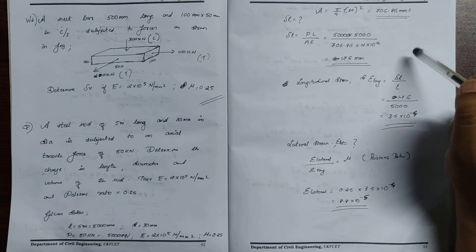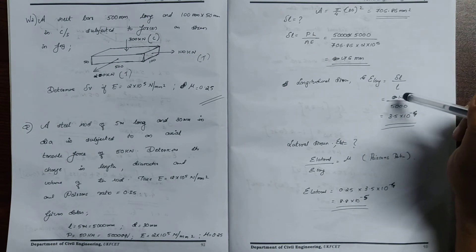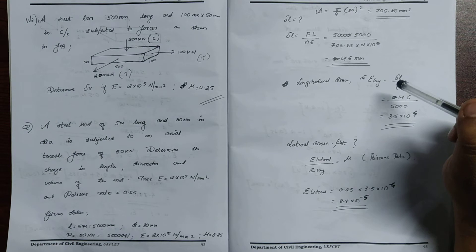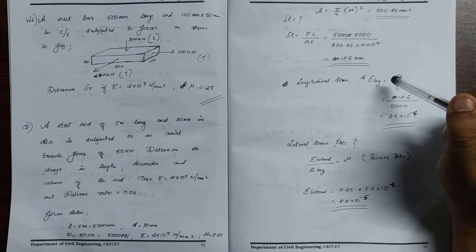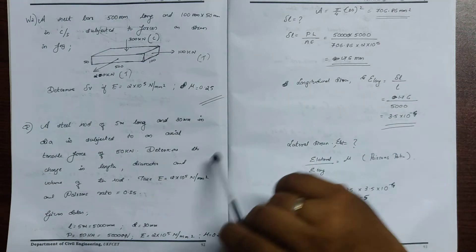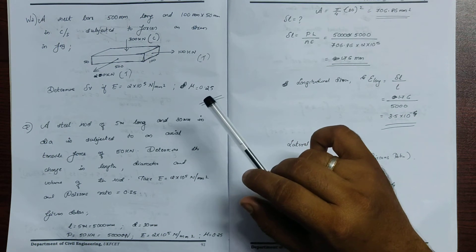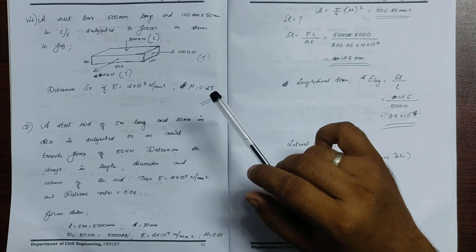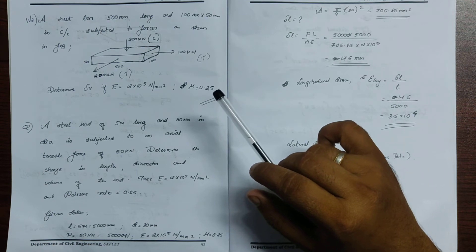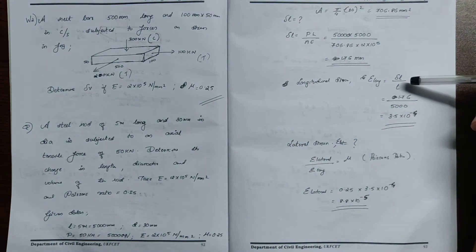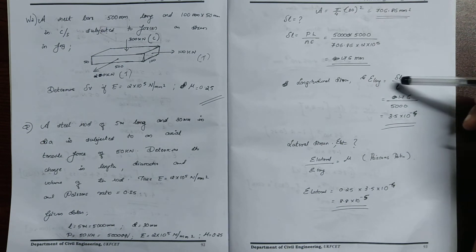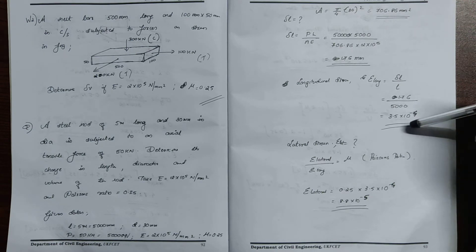We need to find the delta longitudinal strain and the lateral strain. Since the Poisson's ratio is given in the question as 0.25, we use the basic equation: Poisson's ratio equals lateral strain divided by longitudinal strain. For that, we need to find the longitudinal strain, which is change in length divided by original length.